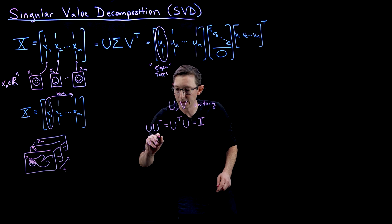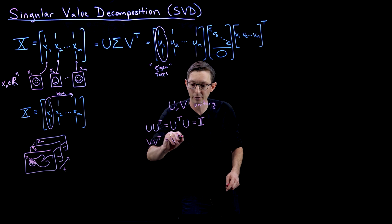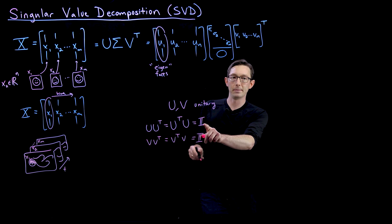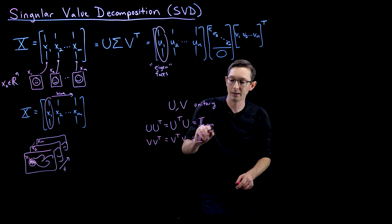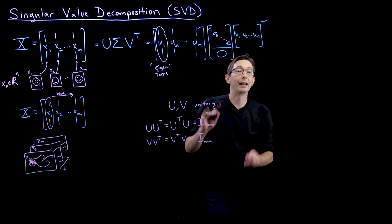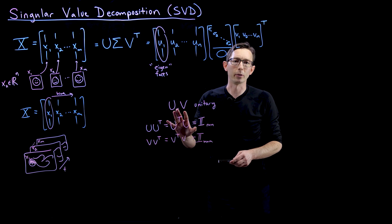Same thing with V. V transpose V equals V transpose V equals the identity matrix. This one is an N by N. This one is an M by M.